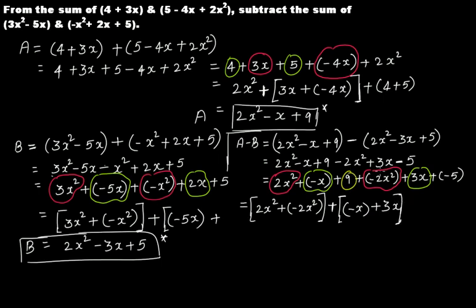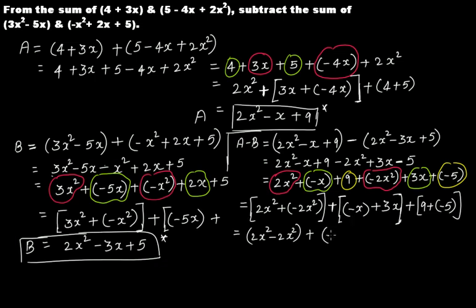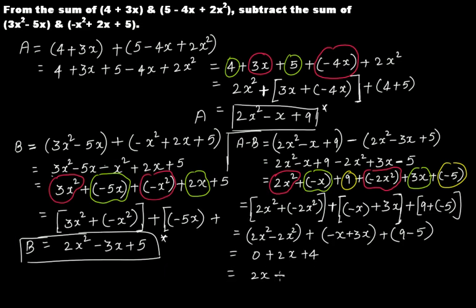Grouping like terms: 2x squared and minus 2x squared give 0; minus x and plus 3x give plus 2x; 9 and minus 5 give 4. So A minus B equals 2x plus 4. This is the final answer.